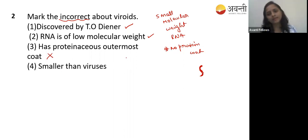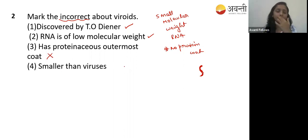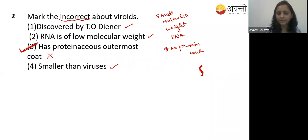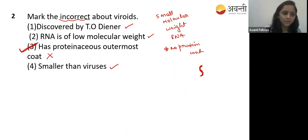Option four - smaller than a virus - yes, that is correct. So the correct answer is option three - the statement about a proteinaceous outermost coat is wrong. Since they are asking for the incorrect statement, option three is the correct answer.